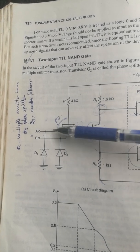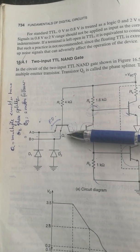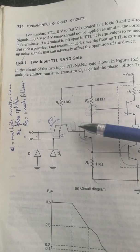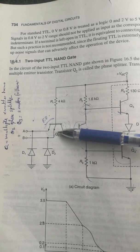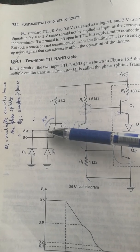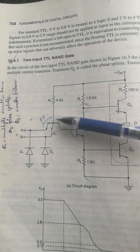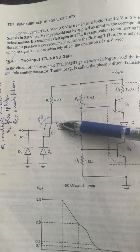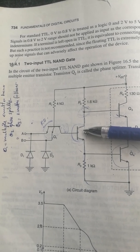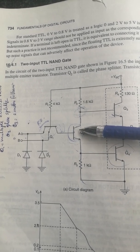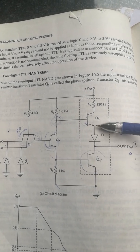Q1 is a multiple emitter transistor — it has an emitter, base, and collector, and is called multiple emitter because we have two inputs. Q2 is the phase splitter. Q3 and Q4 form what we call the totem pole arrangement.